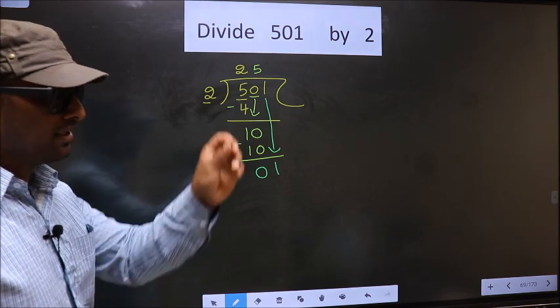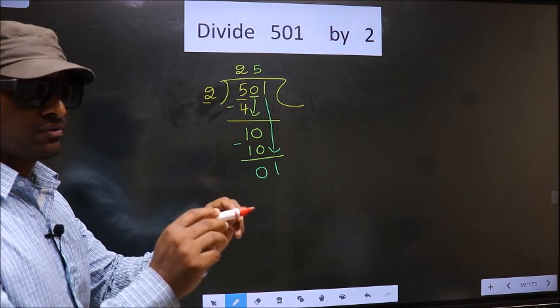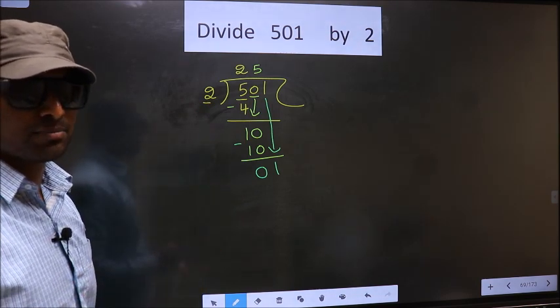I repeat. Bringing the number down and putting a dot and taking 0. Both at the same step, you are not supposed to do.